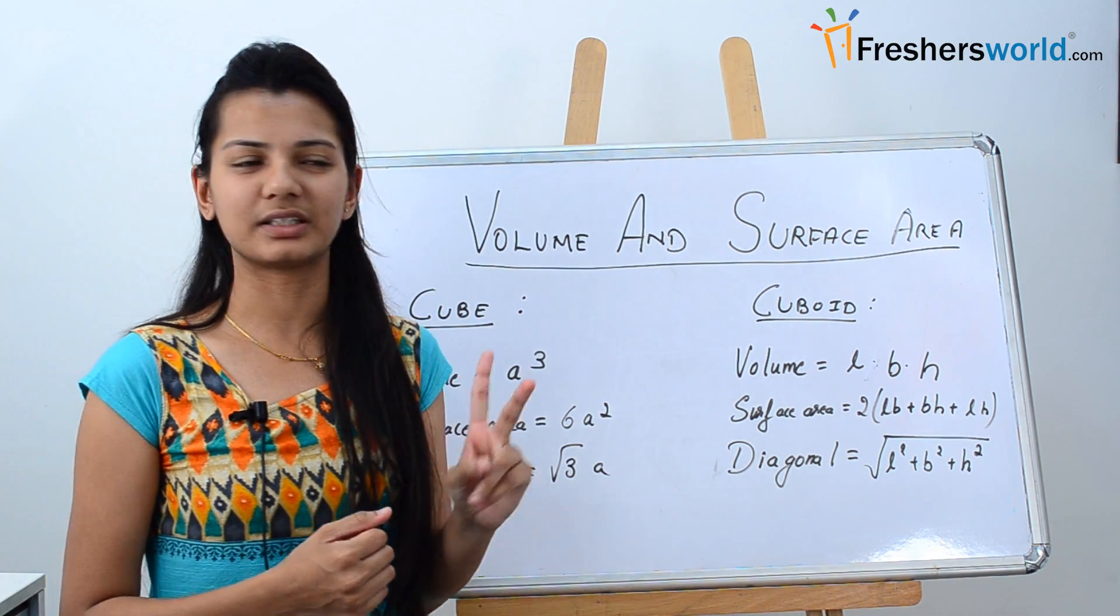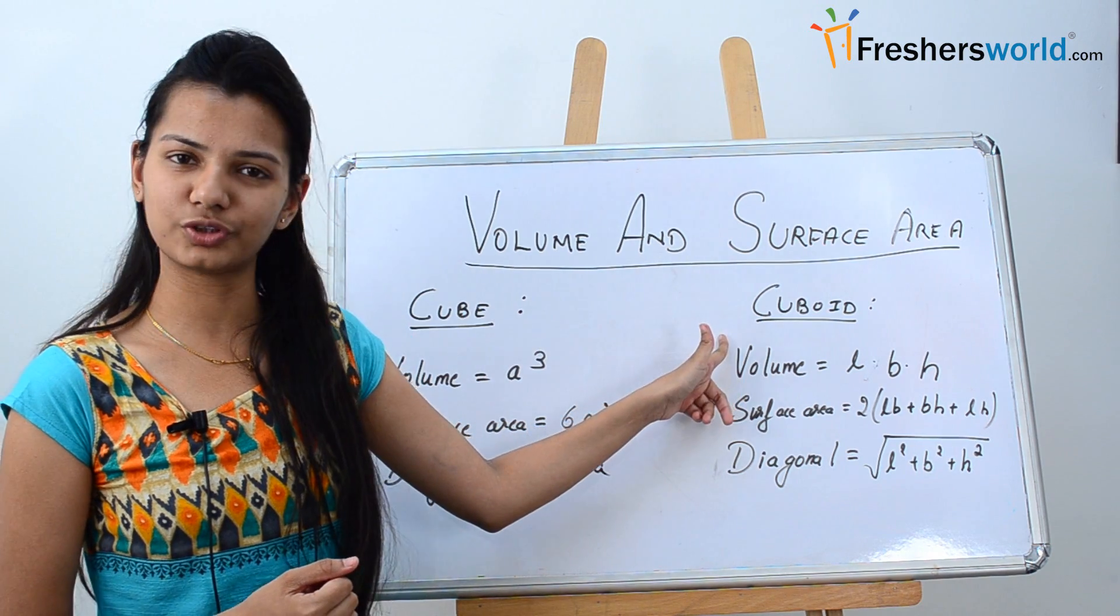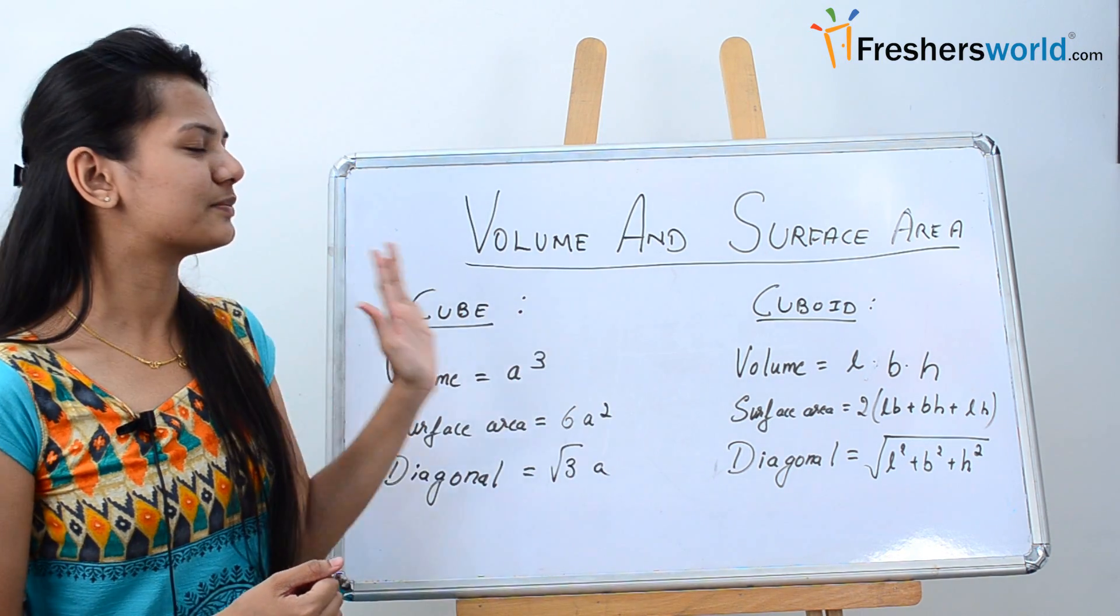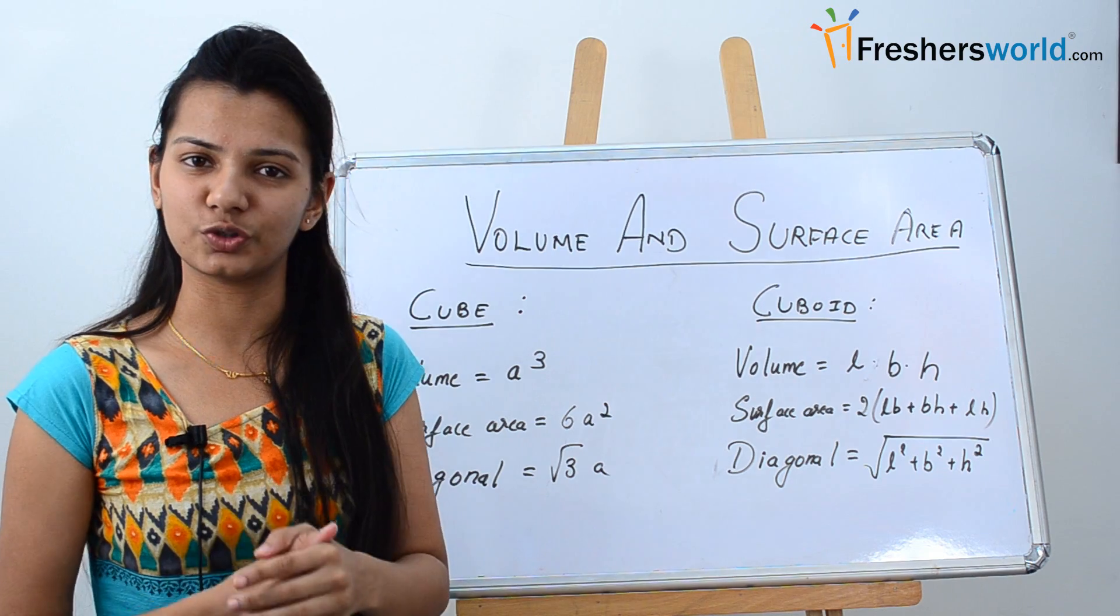Now we know the two main things in volume and surface area: cube and cuboid. Now let's first see the basic formulas what we use in cube and cuboid.